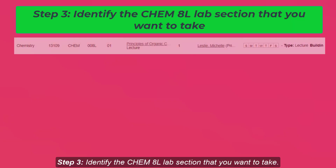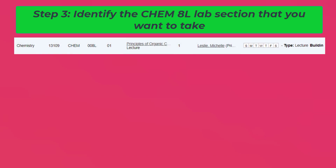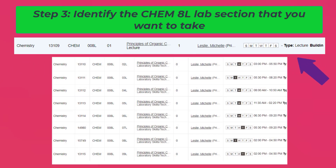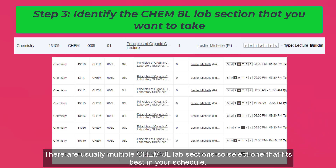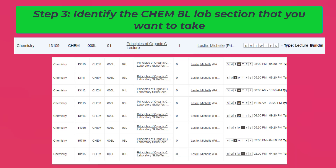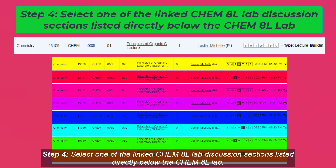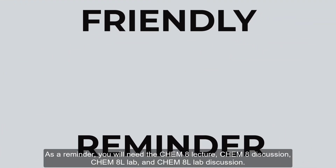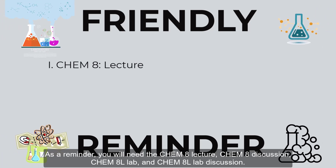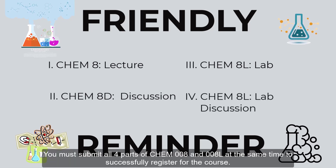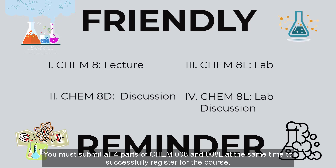Step 3: Identify the Chem 8L lab section that you want to take. Chem 8L has both a lab time and a discussion time, and there are usually multiple Chem 8L lab sections, so select one that fits best in your schedule. Step 4: Select one of the linked Chem 8L lab discussion sections listed directly below the Chem 8L lab. As a reminder, you will need the Chem 8 lecture, the Chem 8 discussion, the Chem 8 lab, and the Chem 8 lab discussion. You must submit all four parts of Chem 8 and 8L at the same time to successfully register for the course.